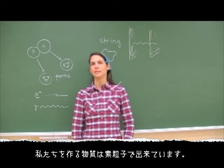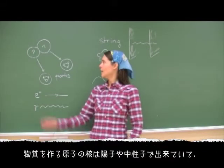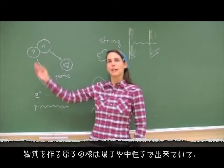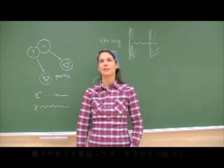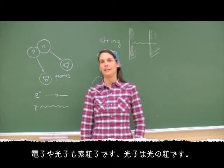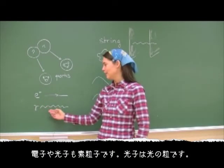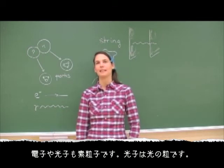The matter we are made of consists of elementary particles. The protons and neutrons consist of three quarks each. Other examples of elementary particles are electrons and photons, the quanta of light.